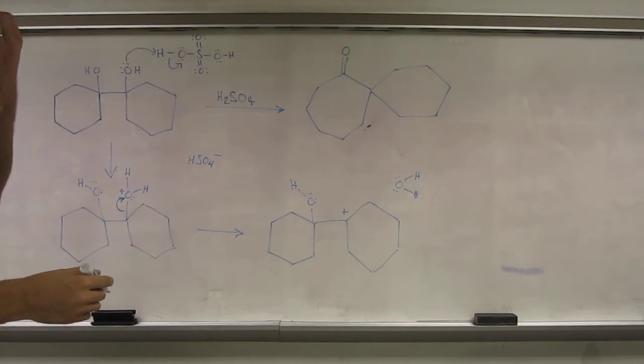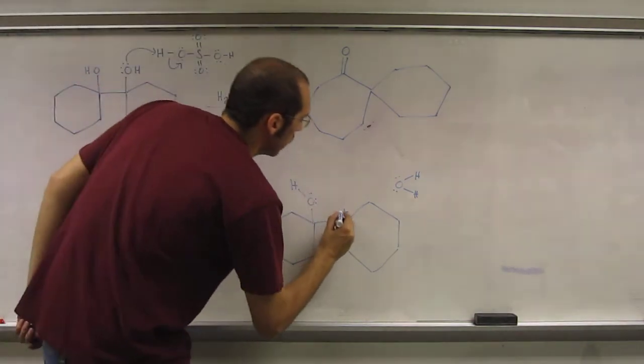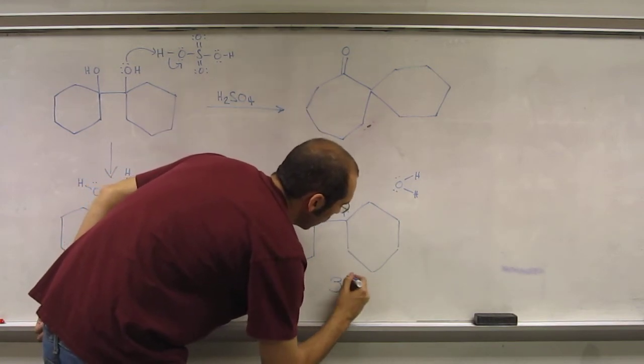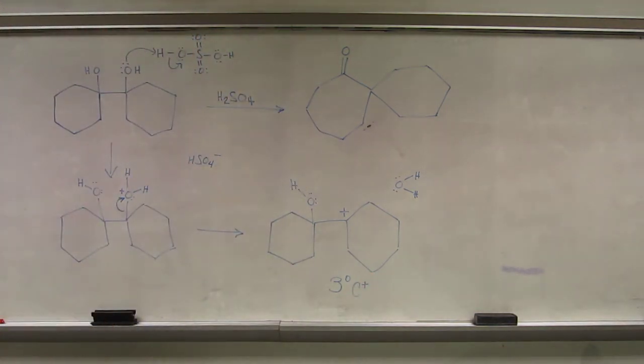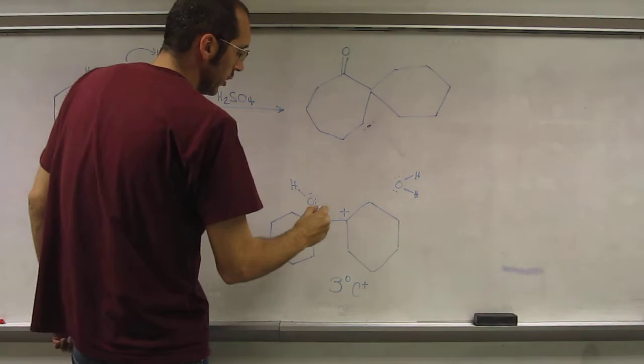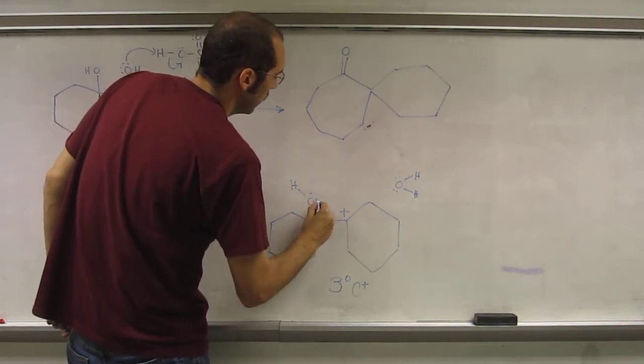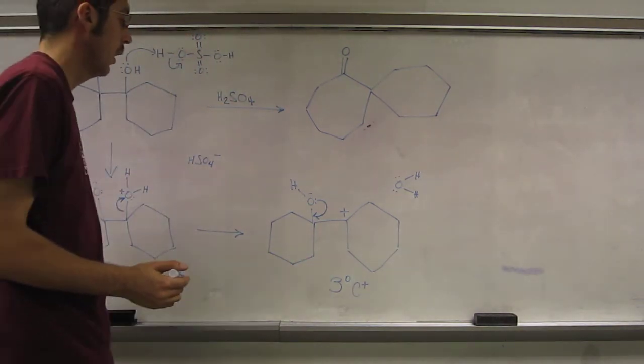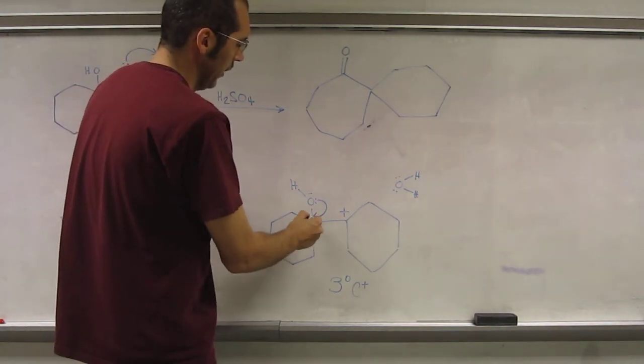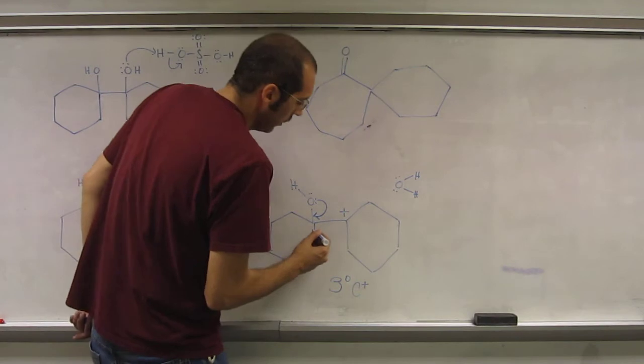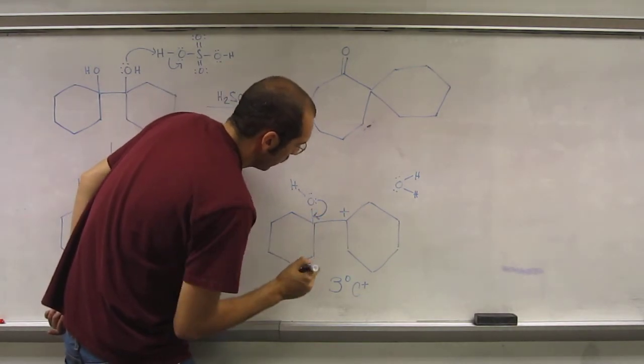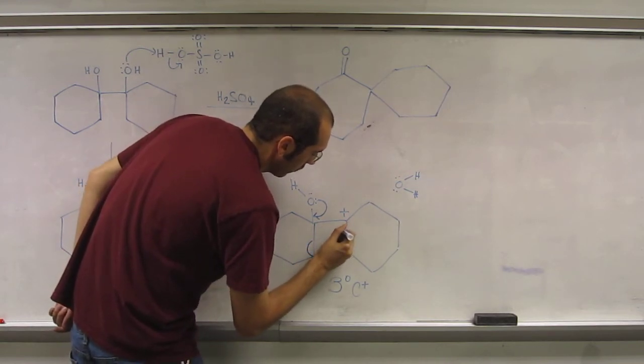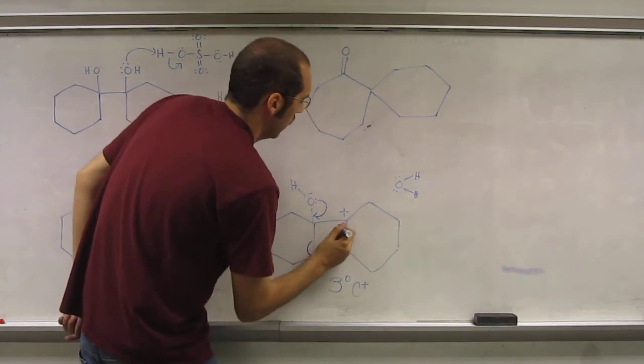Okay, and you can see the very stable tertiary carbocation, very stable. So what's going to happen is the initiation of the alkyl shift, the 1,2 alkyl shift. Remember, the 1,2 alkyl shift is preferable to the 1,2 hydride shift, not to mention that there's no hydrogen there.